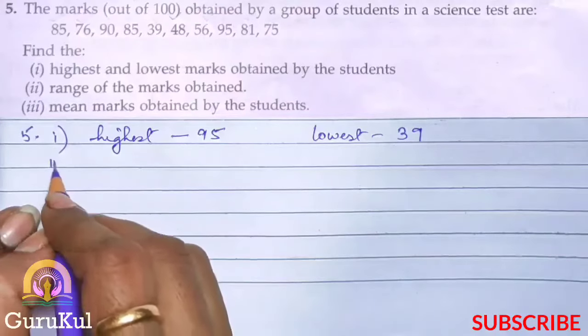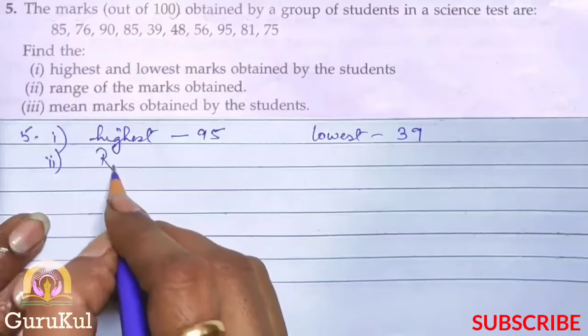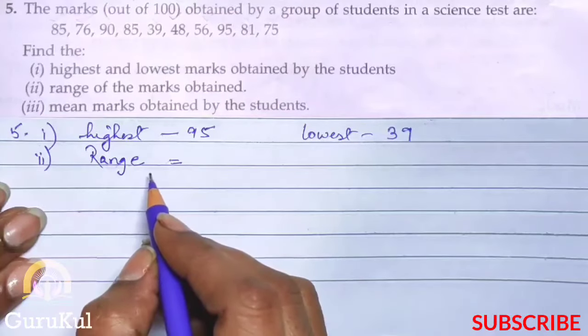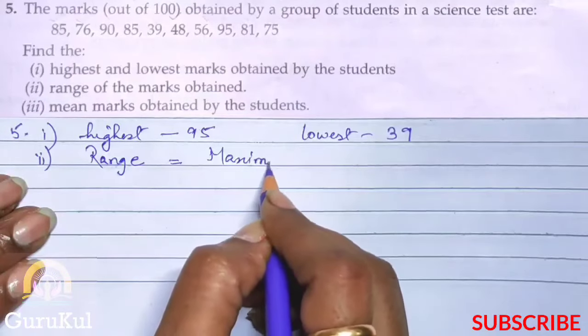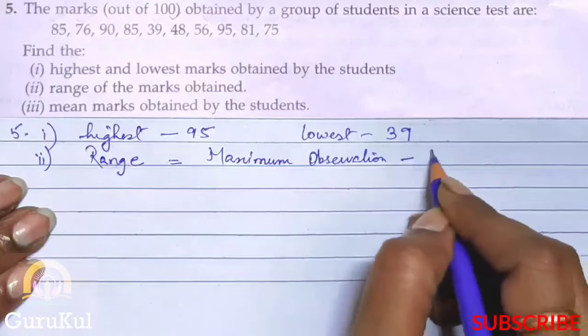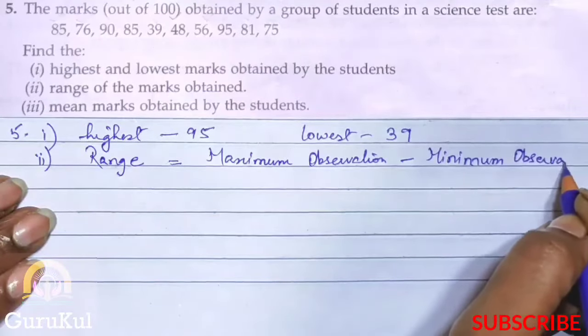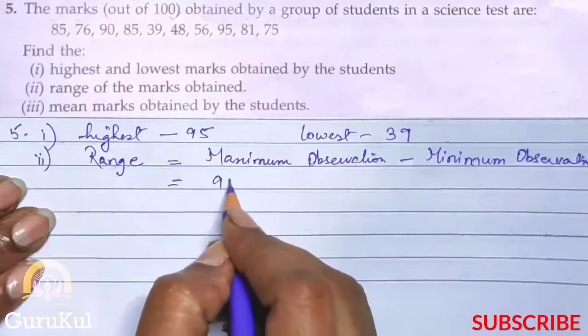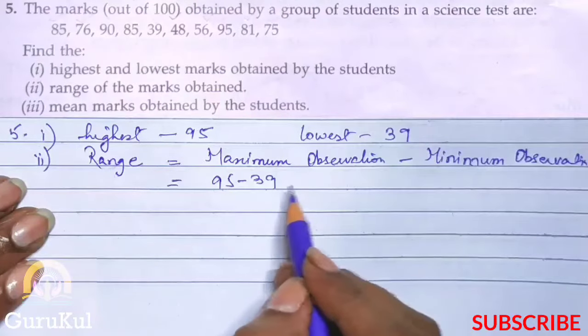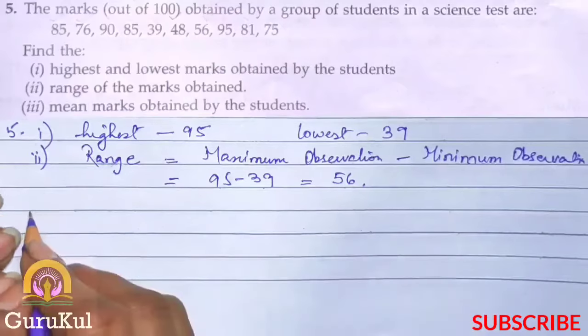Part 1 done. Second: we have to find the range of the marks obtained. Range - remember from the last episode: range is equal to maximum observation minus minimum observation, right? That is 95 minus 39. So 95 is highest or maximum and 39 is lowest. So doing this our answer is 56. So this is the range.